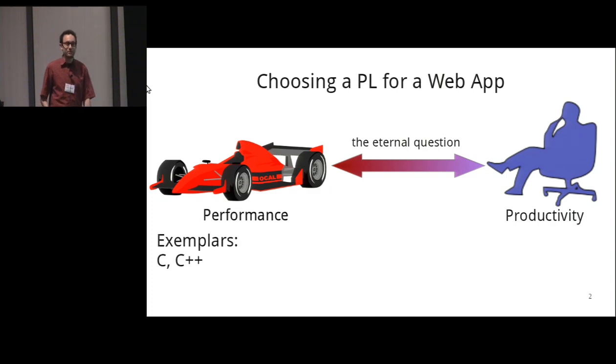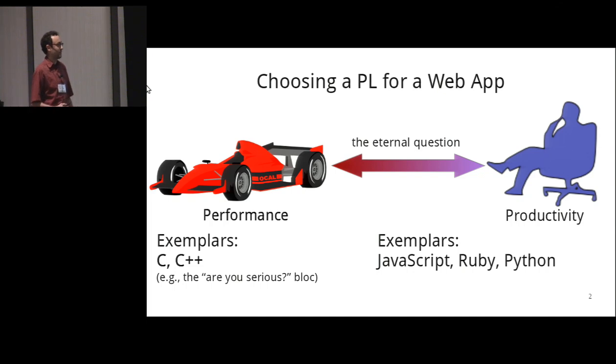At the performance end of the spectrum, we have languages like C and C++, and I'll call these the 'Are You Serious' block, because basically no one would ever choose these to build a real-world application because the programmer productivity is so bad. At the high-level end of the spectrum, we have popular scripting languages like JavaScript, Ruby, and Python, and I'll call these the 'Better Buy a Few More Servers' block, because we know that these languages have such bad performance that you might want to think twice about using them for that reason.